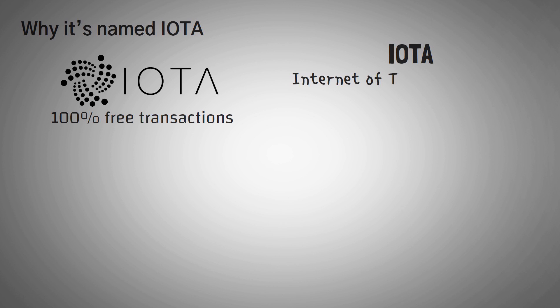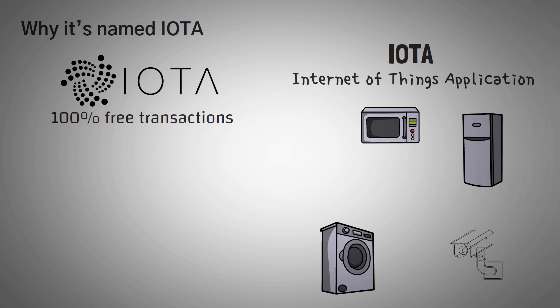So first off, IOTA is a cryptocurrency that offers 100% free transactions. Let's go over why it's called IOTA. Some say IOTA stands for Internet of Things Application. Now the Internet of Things is an idea where we have a bunch of different electronics like our fridge, microwave, washer, security system, even the watches we wear, all the way to your electricity breaker, all connected through the internet.